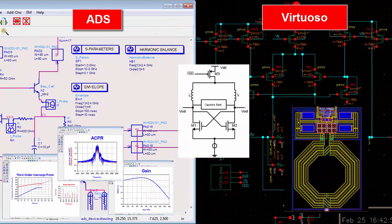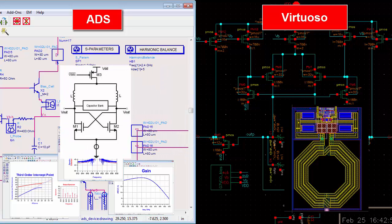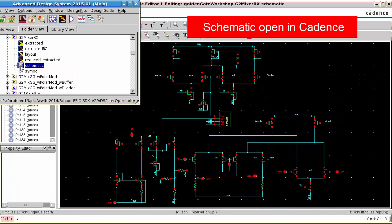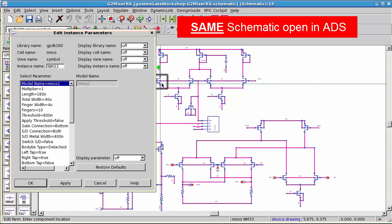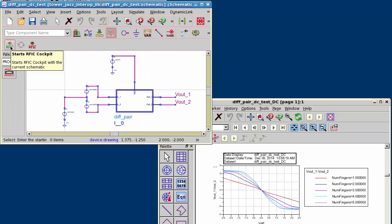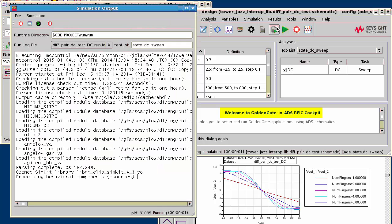Interoperability between ADS and Virtuoso allows designers to easily move designs between platforms to access available capabilities. Edit and simulate schematic designs created by Virtuoso in ADS and vice versa. ADS users save time by leveraging designs and simulation setups from Virtuoso using the Golden Gate Simulator and RFIC cockpit now in ADS.